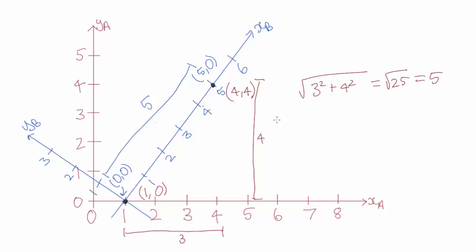So even though points change, for example, Bob was at 1,0 in Alice's frame and 0,0 in his own frame, the distance between two points calculated using Pythagoras is what we call an invariant.